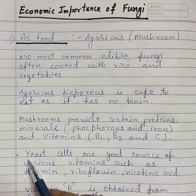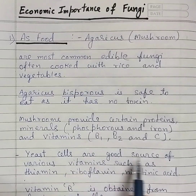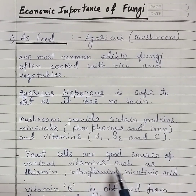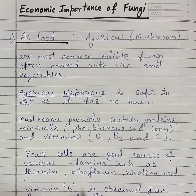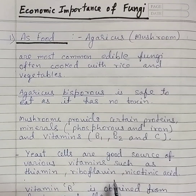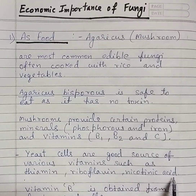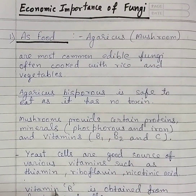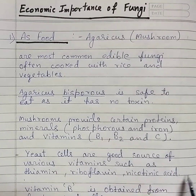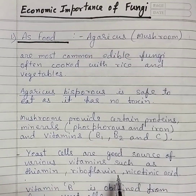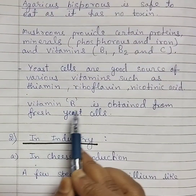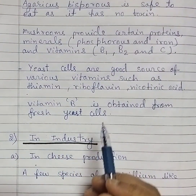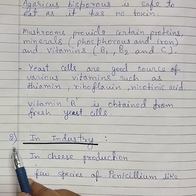Yeast cells are a good source of various vitamins such as thiamine, riboflavin, and nicotinic acid. Vitamin B is obtained from fresh yeast cells.